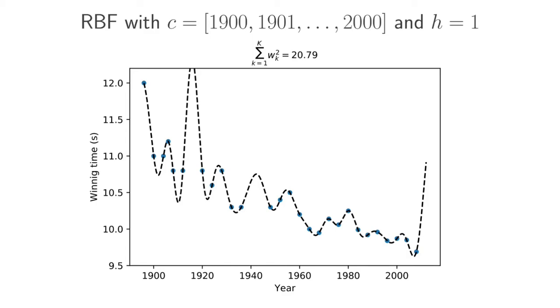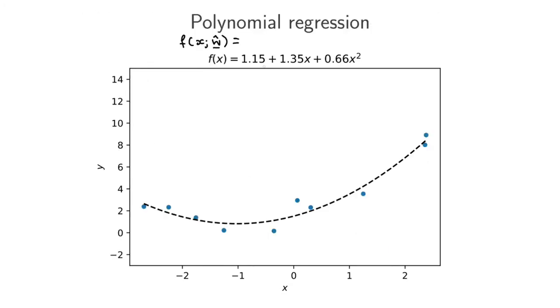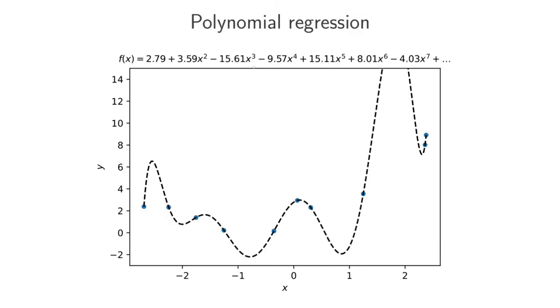We can also notice this in the example that we looked at before with polynomial regression. So this is the second order polynomial that we fit to this data. And you can see that the w0, w1, w2 are around less than 1.5. Now, if we fit a 10th order model to this data, which actually fits the data perfectly, you see that you've got much, much bigger absolute numbers here than we had in the case of the second order model.